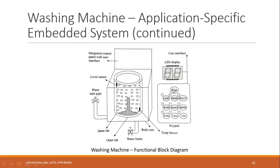The control panel has LED indications and a keypad interface. There is a start button, and selectors for different load types — light, medium, and heavy — and different operations like wash, soak, and rinse, as well as duration settings such as 30 minutes, one hour, or two hours. These interfaces vary depending on the manufacturer.